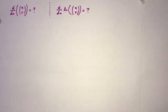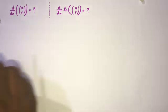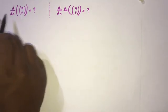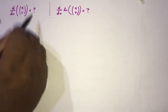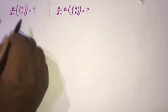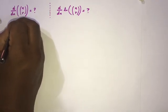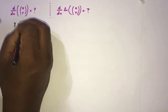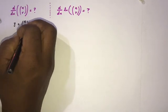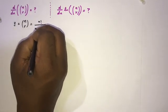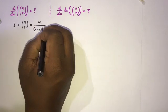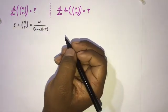Welcome to the Mathematics channel. Today we are going to find the derivative of the binomial coefficient. We have two questions: find the nth derivative of n choose r. First, I am going to find the derivative of n choose r, so I take y equal to n choose r, and we know this is equal to n factorial over (n minus r) factorial times r factorial.